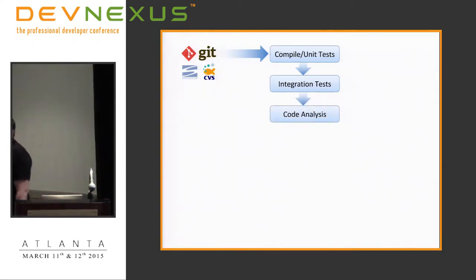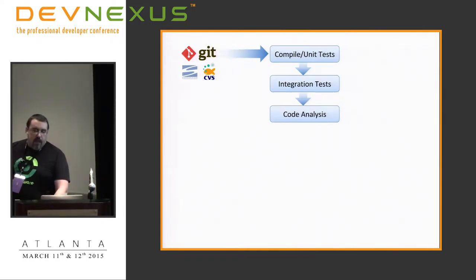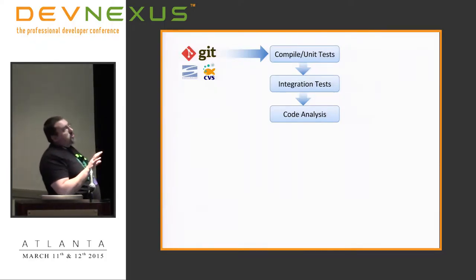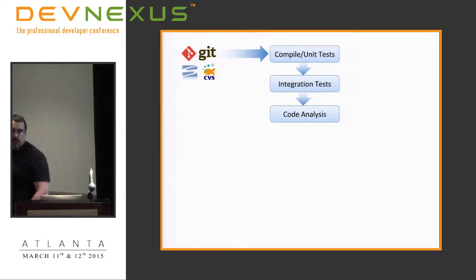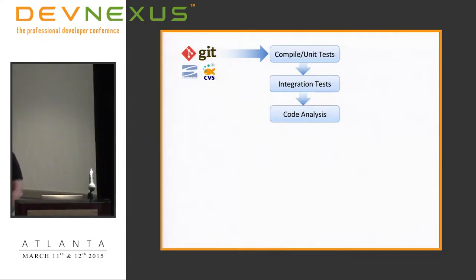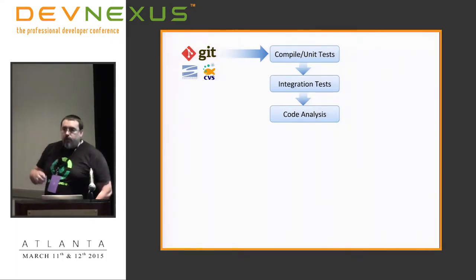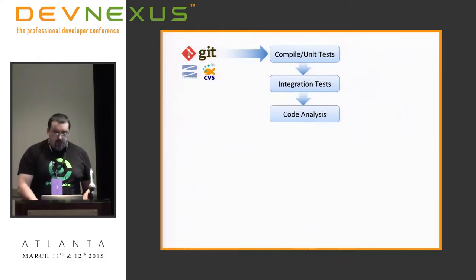Another check we might want to do here is code analysis — static analysis against the code to determine whether it's of high quality, whether we're implementing bad practices, that sort of thing. Code analysis would typically come before integration tests because it's a much faster feedback cycle. We can run code analysis much faster than integration tests. For the purposes of this discussion, we're doing it in this order, but your mileage may vary — you may have different ideas about how you want to construct your pipeline.